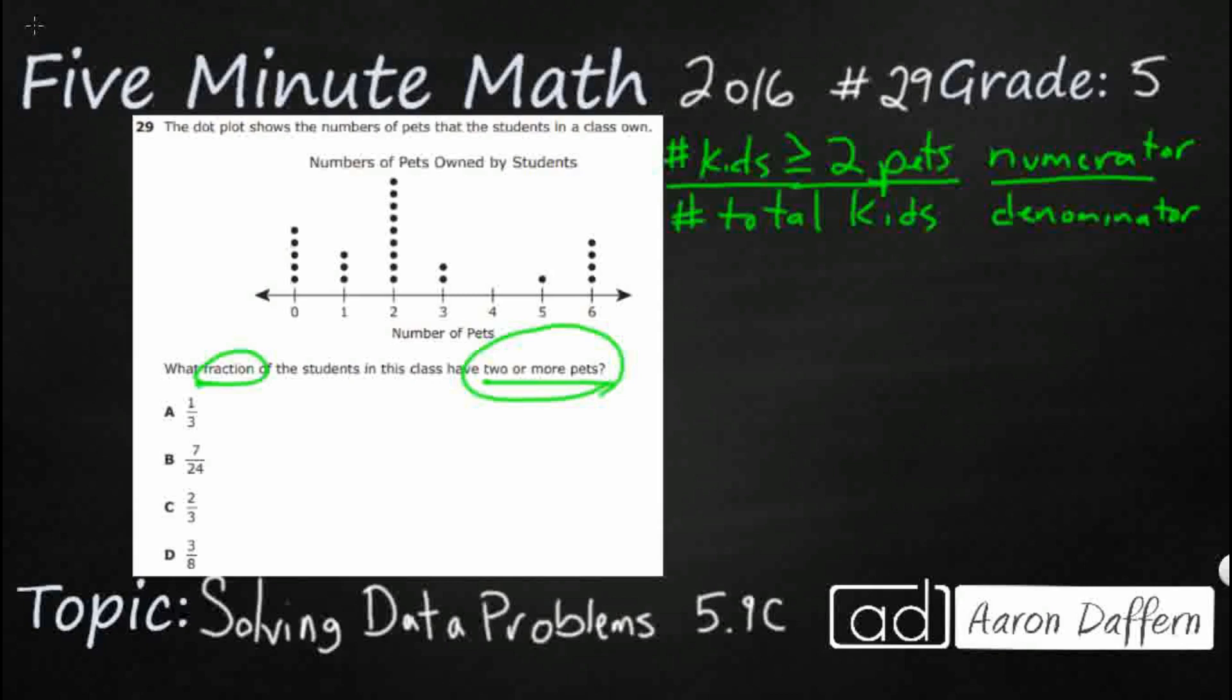Each of these dots just represents one. It's kind of like a pictograph in that way. There's no key that says each of these dots represent more than one. So let's just count them. I've got one, two, three, four, five, six, seven, eight, nine. I'm just going to keep track down there. One, two. I've got one right there. One, two, three, four. All right.